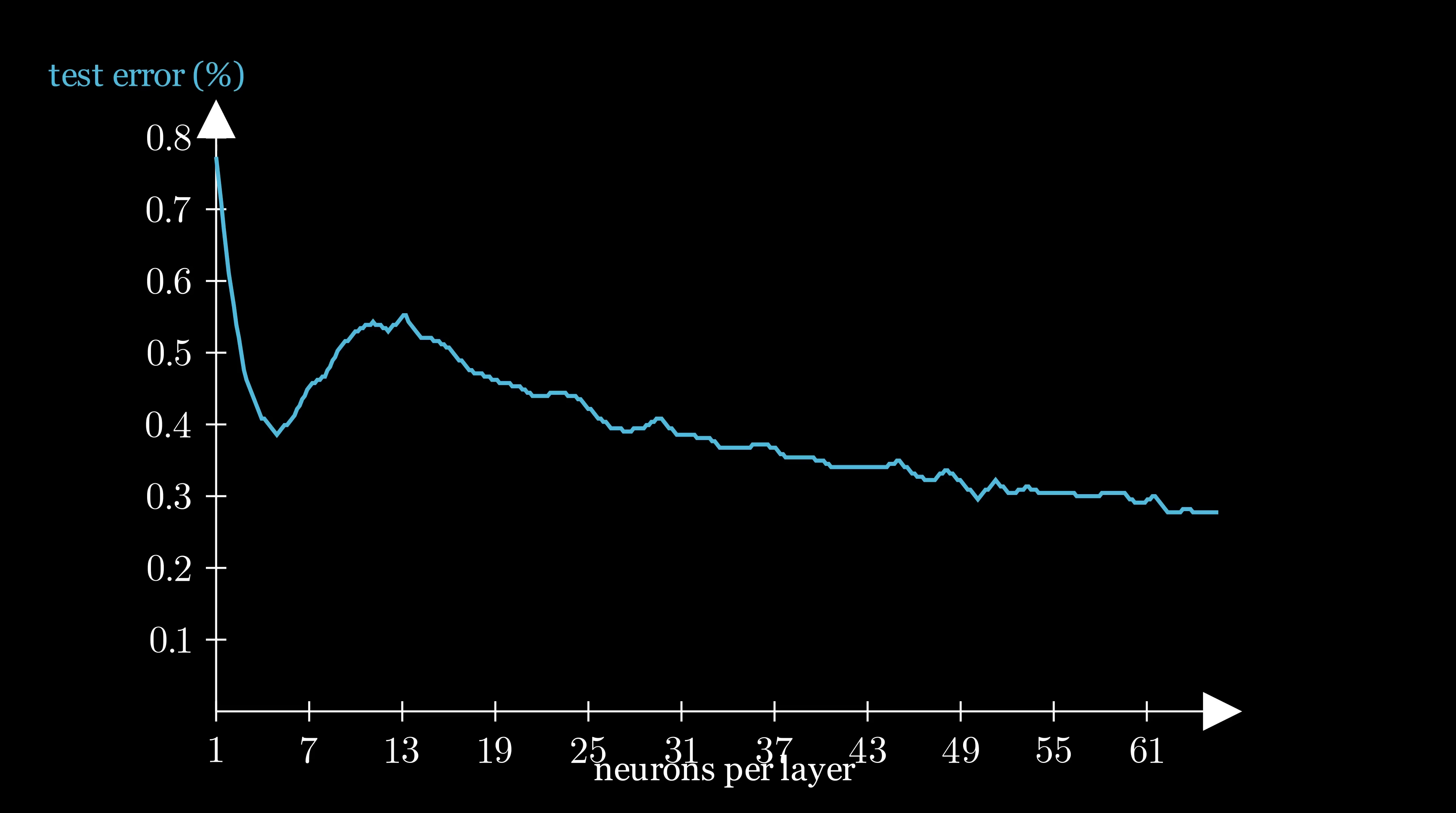This result came as quite a big surprise. It seemed to open up a new avenue for improving AI. Just keep making the models bigger. But at the same time, this result flies in the face of all known statistical learning theory. It shouldn't be possible for models large enough to memorize the training data many times over to have real understanding that generalizes. So what's going on? Why do larger models generalize better?